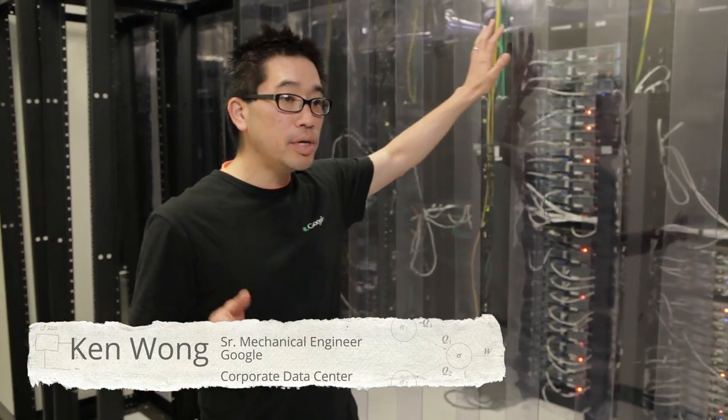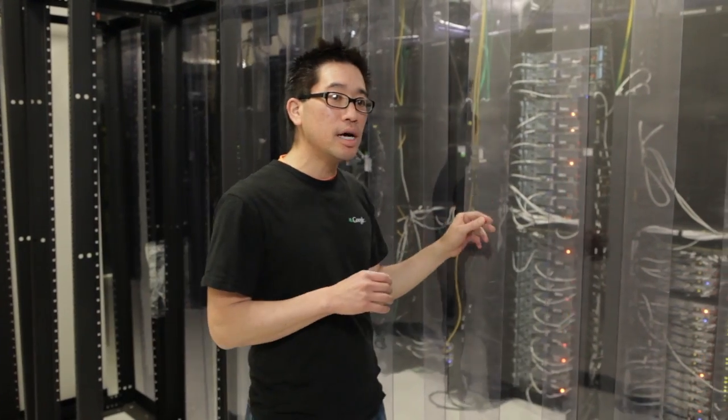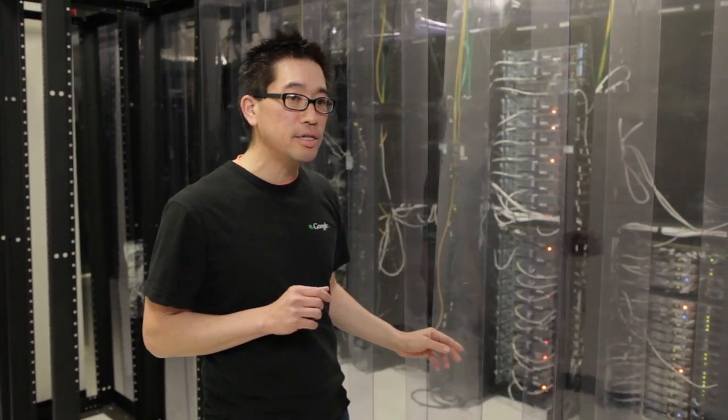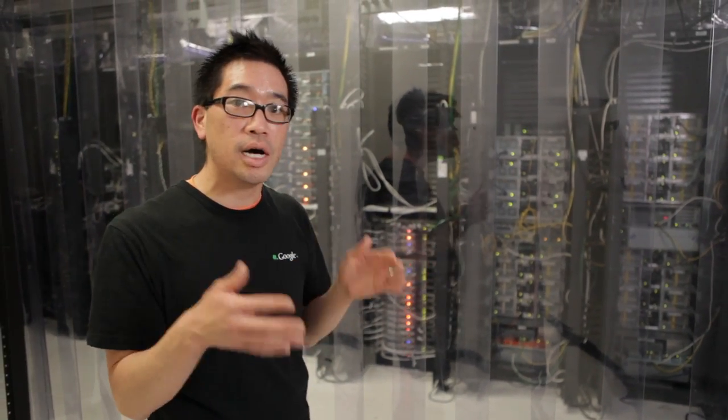We also did a bunch of other retrofits. Here in this corporate data center at Google, we've implemented meat locker curtains that are very inexpensive and easy to install. These are hung from the overhead structure and they separate the cold aisle, which is actually hot, and the hot aisle, which is actually hotter.